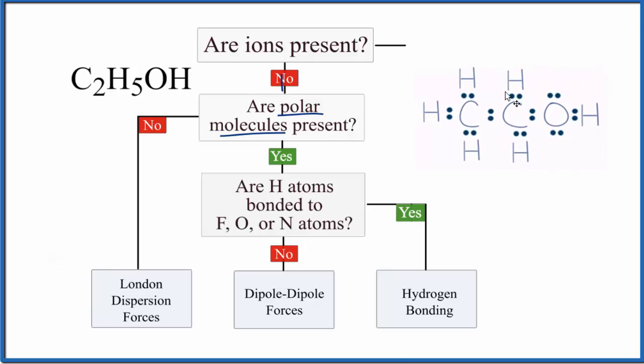So here's the Lewis structure, and we can see that we do have this oxygen, which is very electronegative, attached to the hydrogen and the carbon here. So we'd expect that this might be a polar molecule. Let's take a look at this in three dimensions.